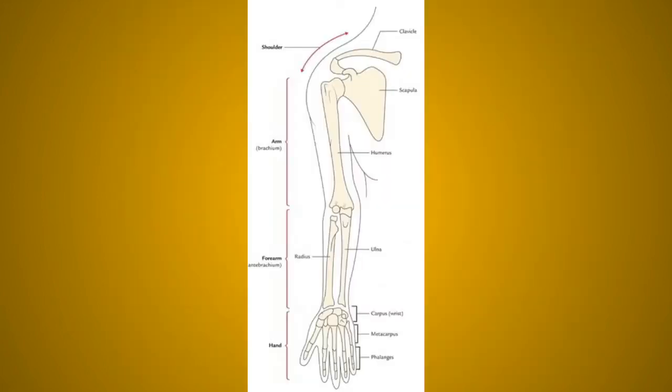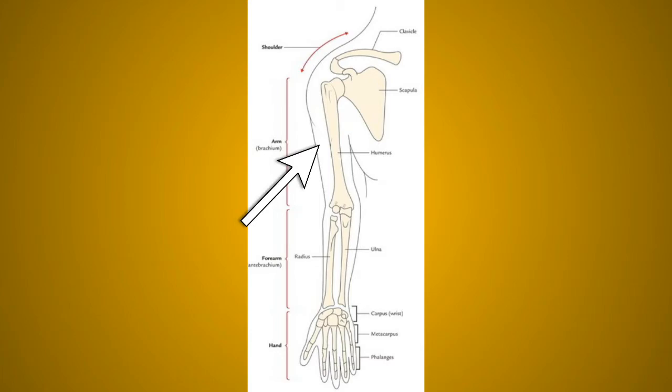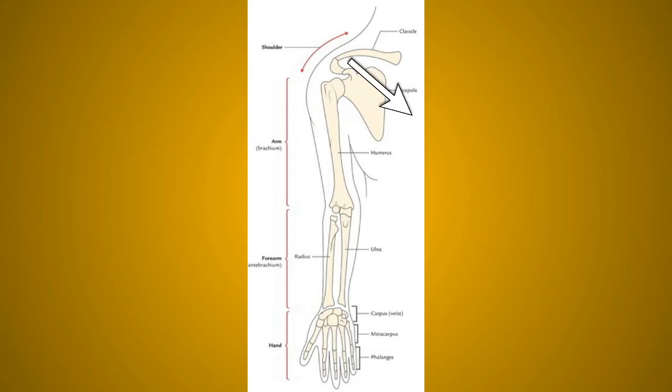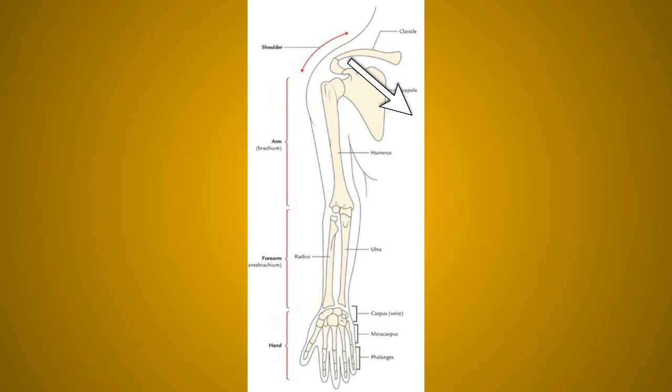Remember, the clavicle receives the weight of the upper limb via the lateral one-third through the coracoclavicular ligament, and transmits the weight of the upper limb to the axial skeleton via the medial two-third part of the clavicle bone.